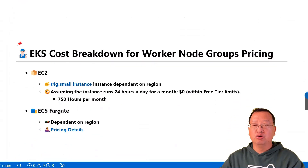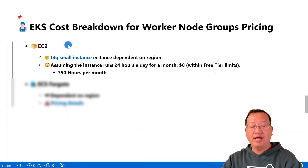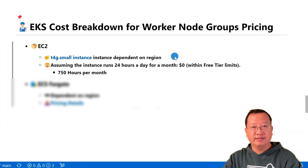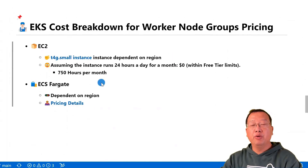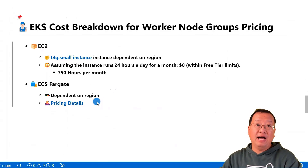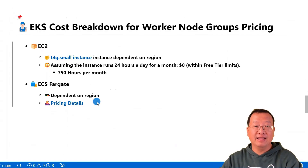The next topic is Worker Node Group Cost. Worker node groups come in two types: EC2 instances and EKS Fargate. Using EC2 instances can save you money. The t2.micro instance provides 750 hours per month at zero cost — with 2 vCPUs and 2 GB of memory. Meanwhile, Fargate has associated costs per vCPU and per GB of memory. Check the link for specifics. There is no free usage for EKS Fargate, which is another strong reason to start learning EKS with EC2 instances — that way, you'll save money.